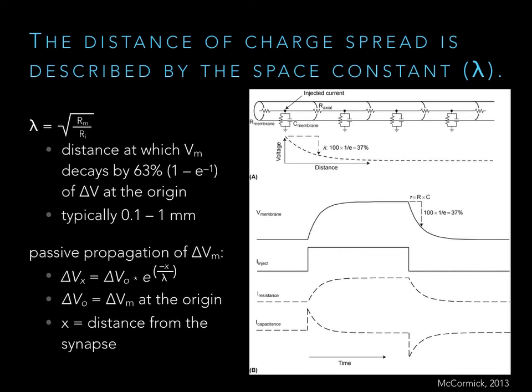If you decrease membrane resistance and the membrane is leakier, that charge will dissipate — it flows out of leak channels and won't travel as far. The ability of charge to propagate passively within a neuron is based on membrane and internal resistance. By making the membrane leakier, a neuron can be less sensitive to synaptic input. Sometimes neurons do this when they run out of ATP — they open ATP-gated potassium channels, become leakier and less excitable, tending to hang out around rest so they don't fire action potentials.